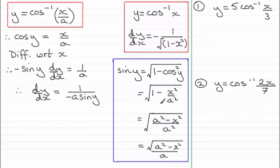So I can put all of this over the lowest common multiple, which is a squared, and I end up with the root of a squared minus x squared all over a squared. And then I can square root the denominator to just leave me with a, and leave the top as the root of a squared minus x squared.